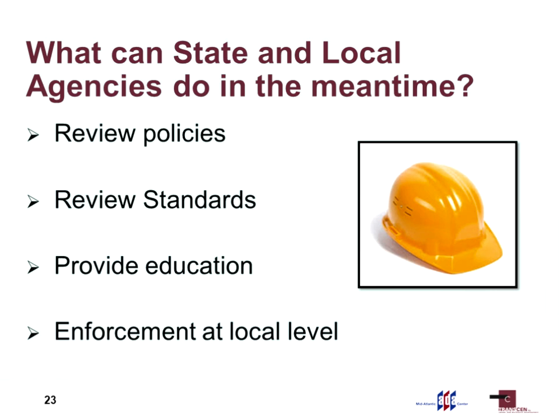Enforcement at a local level: the ADA requires you to make your facilities accessible, but you can't enforce a federal law at a local level. What you can enforce are your local laws. So if you have policies and standards, and you bid a project out to a contractor, you expect them to follow the standards they bid on. Your inspection also has to be up to par so that your finished product is actually accessible. You can't enforce the ADA, but you can enforce your local policies and make sure your construction is accessible.